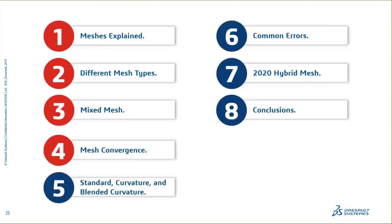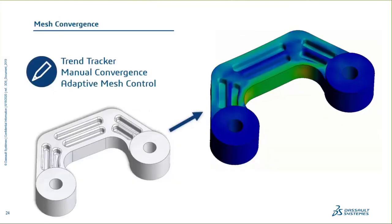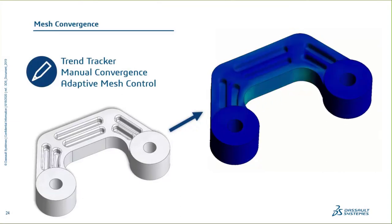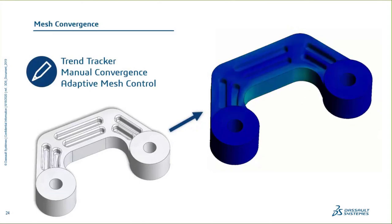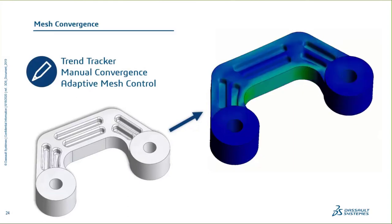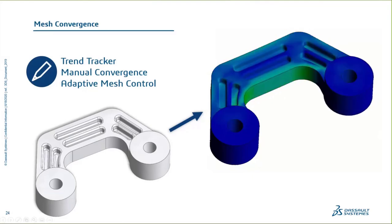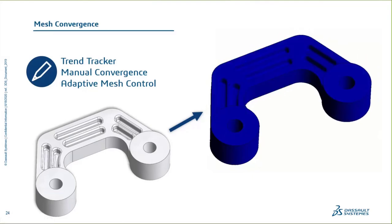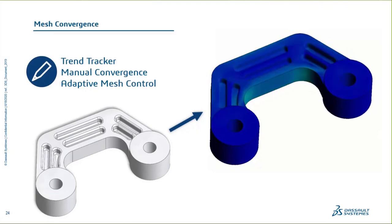Let's switch gears and talk about mesh convergence. This will be on a solid piece of geometry. Mesh convergence gives you a feel for the validity of your results — you want to make sure results plateau at a given number. By making the mesh smaller, we ensure we're settling down on a given high-stress number.